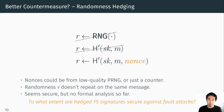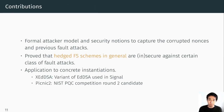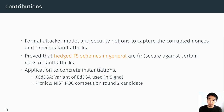In this work we answer that question. The contributions of the paper are as follows: first, we present a formal attacker model and security notions to capture the corrupted randomness analysis and the previous fault attackers. Using these, we prove that hedged Fiat-Shamir schemes in general are secure or insecure against certain classes of fault attacks. Then, using the generic results, we have two applications: the X-EdDSA signature scheme, a variant of EdDSA used in the Signal messaging protocol, and the Picnic2 post-quantum signature scheme.